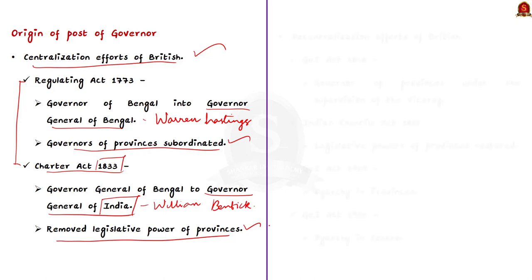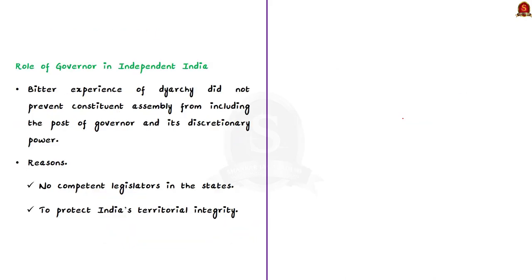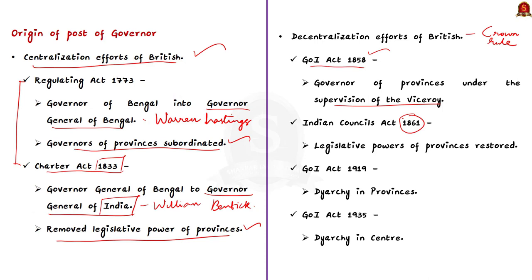After 1857, when the Crown took control of India, a decentralization process started. The Government of India Act 1858 placed the governor under the supervision of the Viceroy. It was the Indian Councils Act 1861 that restored the legislative powers of the governors of the other presidencies, that is Bombay and Madras.